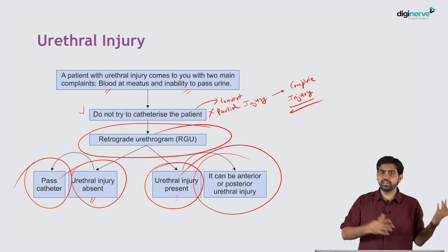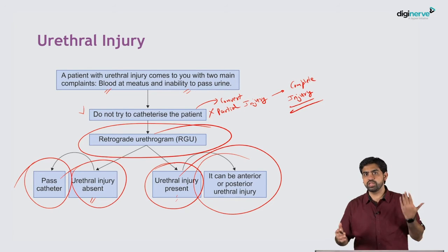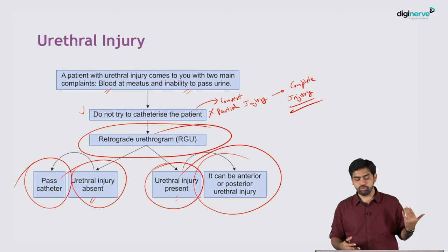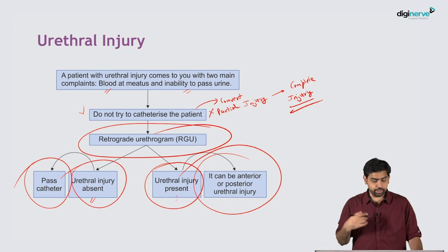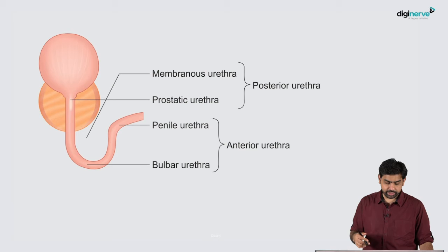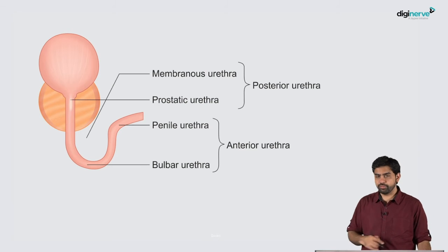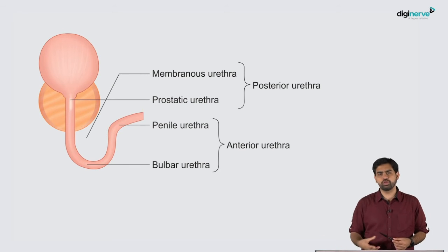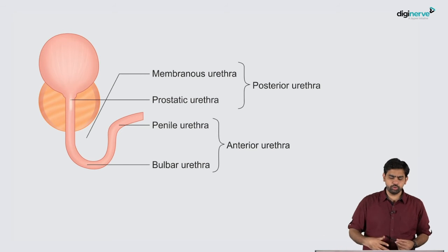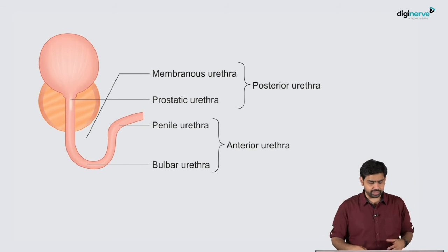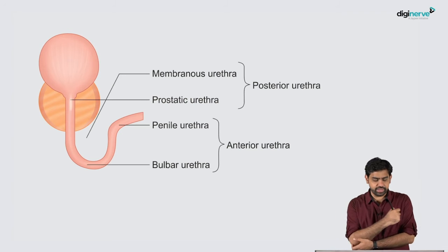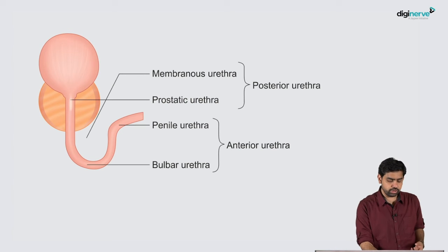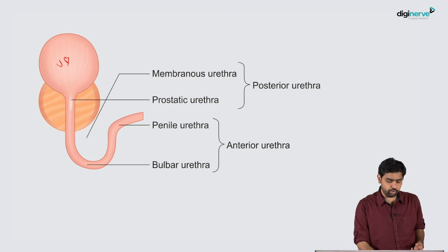If dye extravasation is present, take a proper history and distinguish between anterior and posterior urethral injury. To understand this, let's review the parts of the urethra. Starting from the urinary bladder, you have the prostatic urethra.